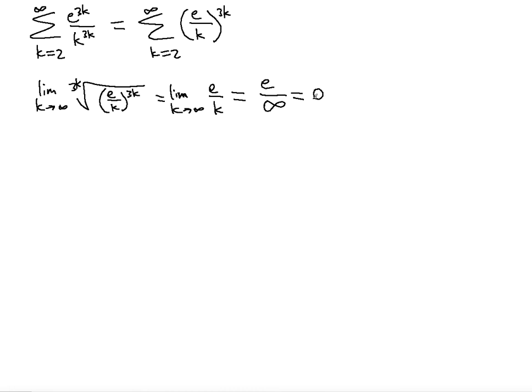Now, the root test involves finding the limit value and understanding what it means. If the limit value is less than 1, it's absolutely convergent. If it's greater than 1, it's divergent. If it's equal to 1, there's no conclusion.